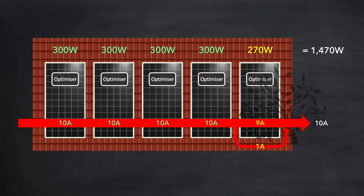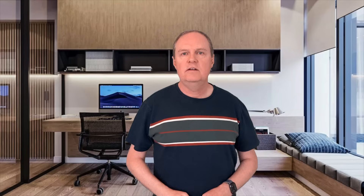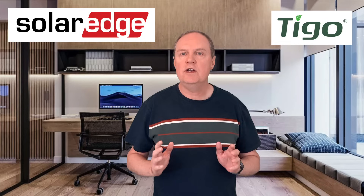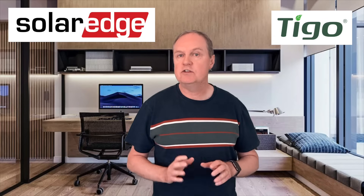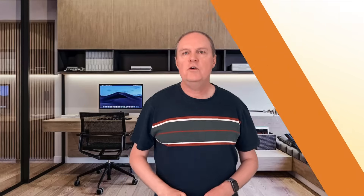It's worth noting that in this particular example, where only a single panel is affected by shading, the optimizers on the other panels are not doing anything. We can remove those, and you can see the effect remains the same. So to counteract shading using optimizers, you only really need to install them on the panels that are affected. Bear in mind, though, that some manufacturers, such as SolarEdge, require you to have their optimizers fitted to all of your panels. Tigo, another leading manufacturer of optimizers, does not have this requirement.